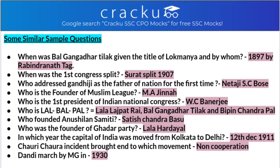Some sample questions: When was Bal Gangadhar Tilak given the title of Lokmanya — meaning accepted by the people — and by whom? This was given in the year 1897 by Rabindranath Tagore. When was the first Congress split? It was in the year 1907 in the Surat Session — also called the Surat Split of 1907. Who addressed Gandhi ji as the Father of the Nation for the first time? The one who addressed Gandhi ji as Bapu or the Father of the Nation is Netaji Subhas Chandra Bose.